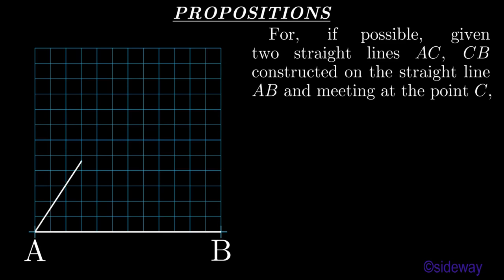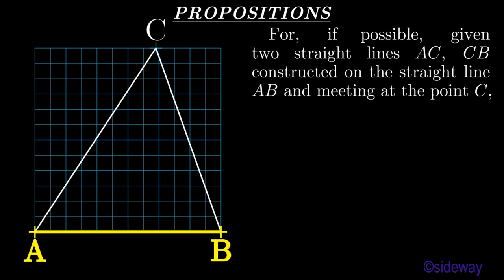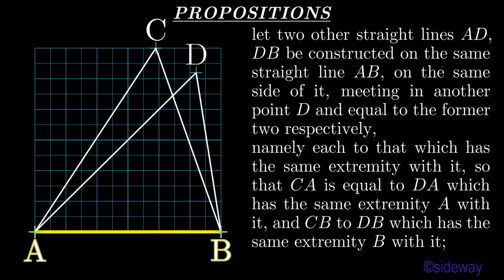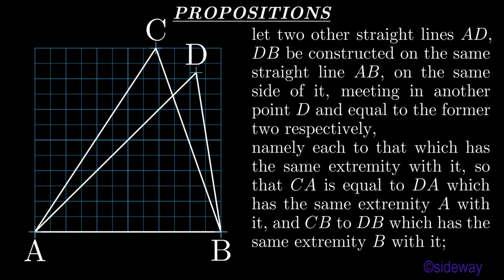If possible, given two straight lines AC, CB constructed on the straight line AB and meeting at the point C, let two other straight lines AD, DB be constructed on the same straight line AB, on the same side of it, meeting in another point D, and equal to the former two respectively, namely each to that which has the same extremity with it, so that CA is equal to DA which has the same extremity A with it, and CB to DB which has the same extremity B with it.